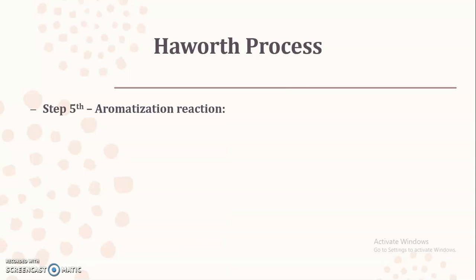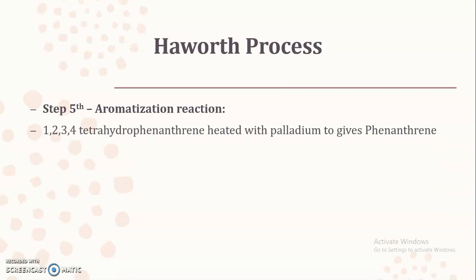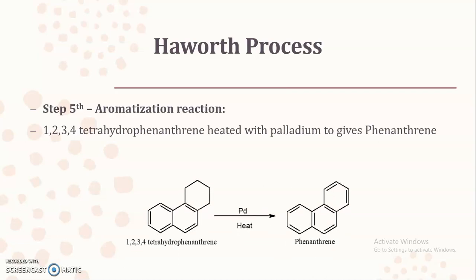The fifth and last step is aromatization. The third ring formed is saturated and must be converted to an unsaturated ring. 1,2,3,4-tetrahydrophenanthrene is heated with palladium as a catalyst, hydrogen atoms are removed, and aromatization takes place to give phenanthrene. In this way phenanthrene is prepared by the Haworth process using five steps: (1) Friedel-Crafts acylation, (2) Clemmensen reduction, (3) ring closure, (4) Clemmensen reduction, and (5) aromatization.